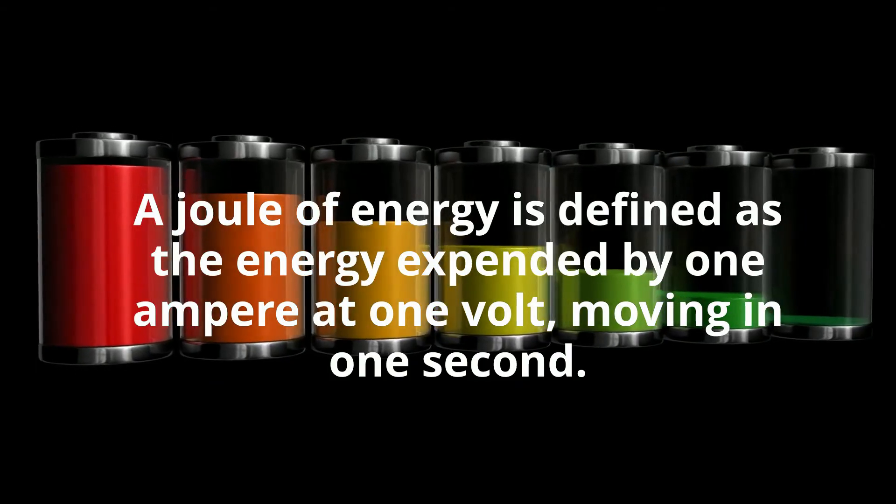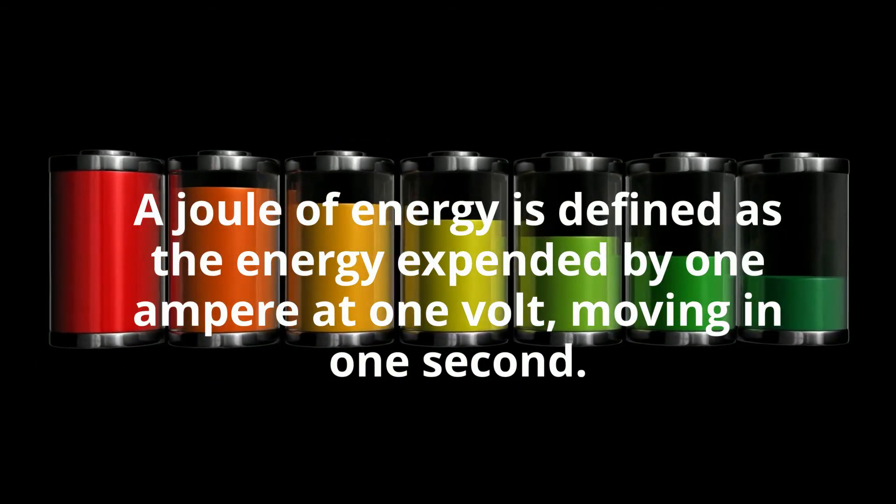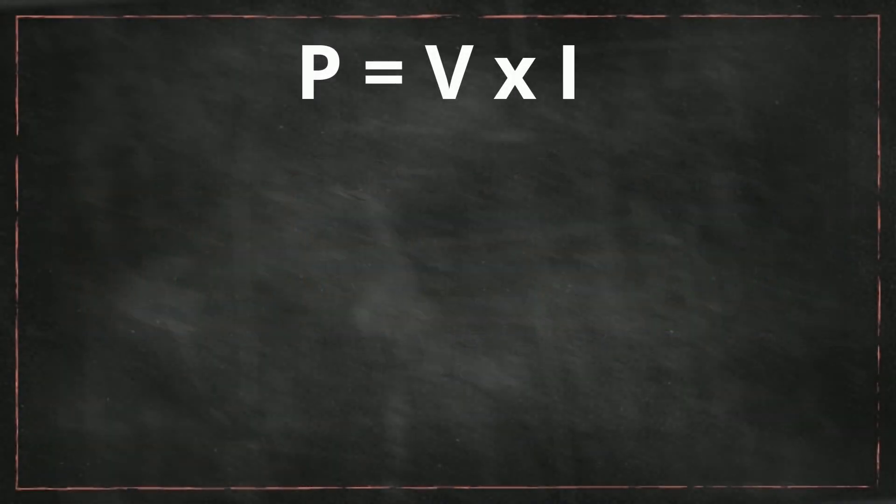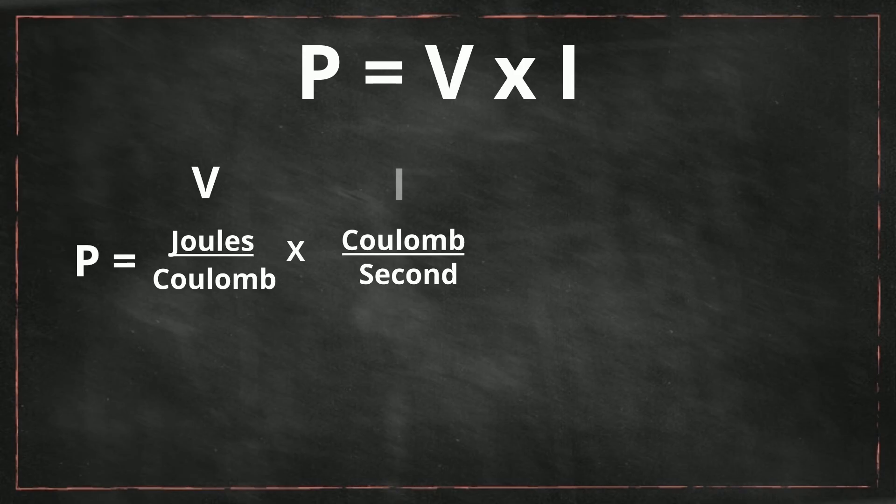So let's go back to P equals V times I. Remember, volt is potential work and current is movement. P equals joules over coulomb which is V, and coulomb per second which is I. The coulombs cancel and you are left with one joule per second, which is a watt. So a watt is a measure of how much work measured in joules is done per second.